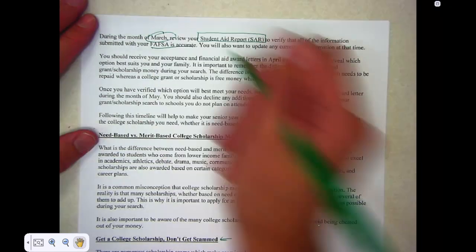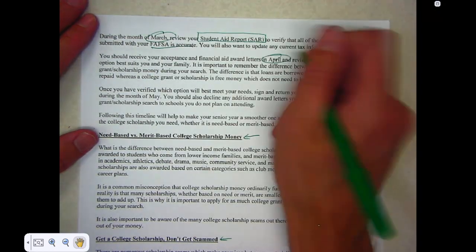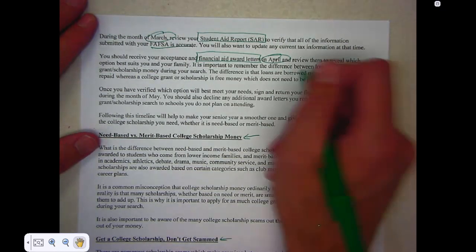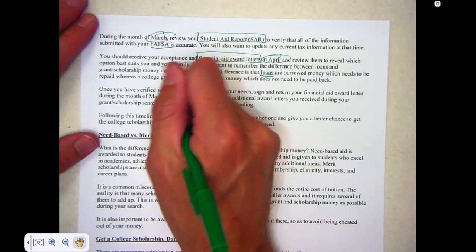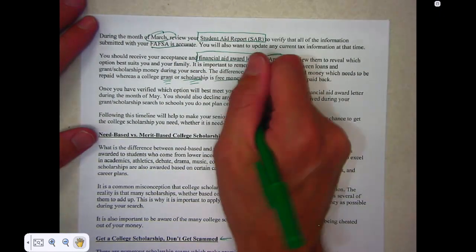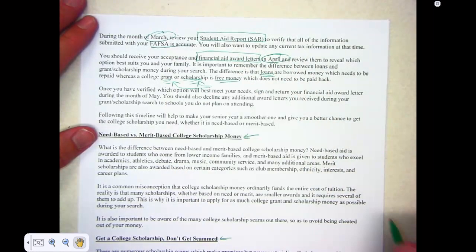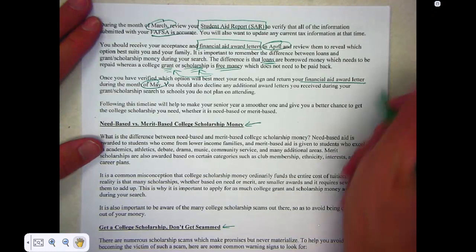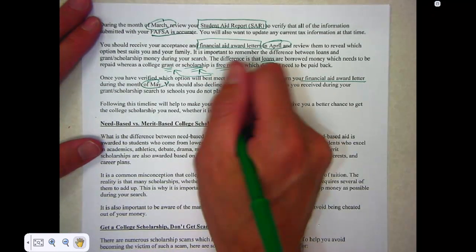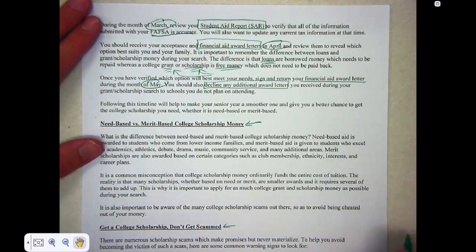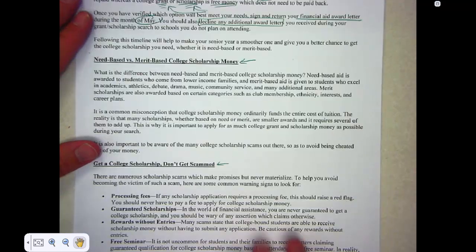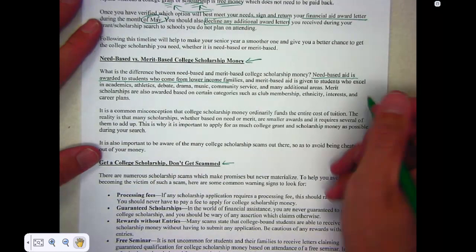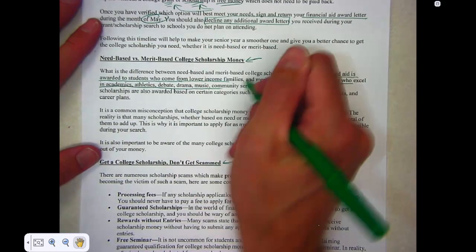In March, there's a student aid report. I can construct a timeline of things to do to make sure the FAFSA is accurate. In April, I'll get financial award letters. This is key: loans versus grants or scholarships. Loans are okay, but I would much rather have free money. In May, I sign the award letter and make a choice. They also want you to decline any other award letters — release that money for someone else. There's also the difference between need-based and merit-based scholarships.